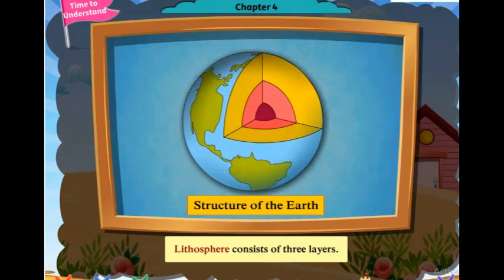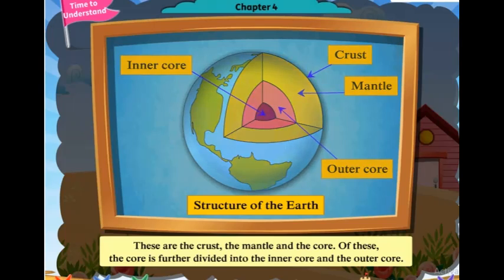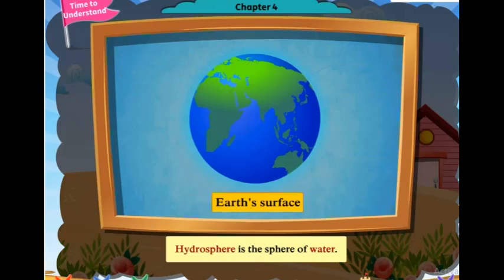The Lithosphere consists of three layers: the crust, the mantle, and the core. Of these, the core is further divided into the inner core and the outer core.